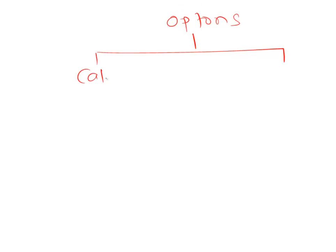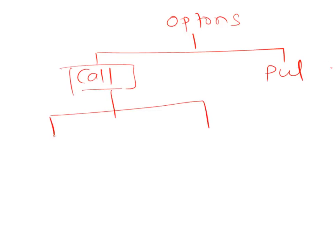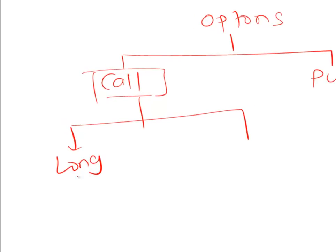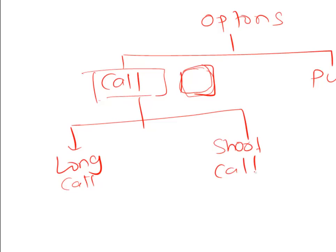Let's convert this into a flowchart to build understanding. Options can be of two types: call options or put options. For now, we will purely focus on call options. On call options you can take two possible sides. When you purchase a call option — think of it as a piece of paper, a financial instrument — you are said to be long on call. When you sell this call option, you are said to be short on call.